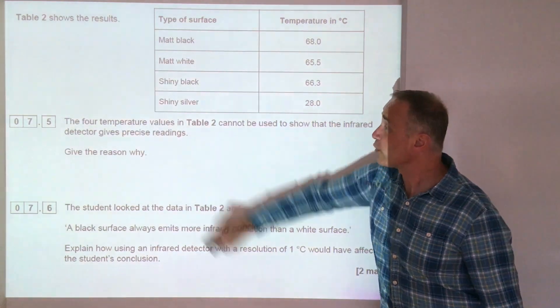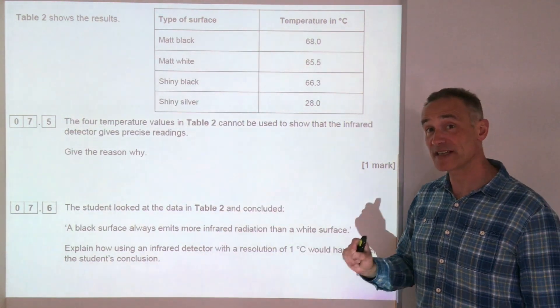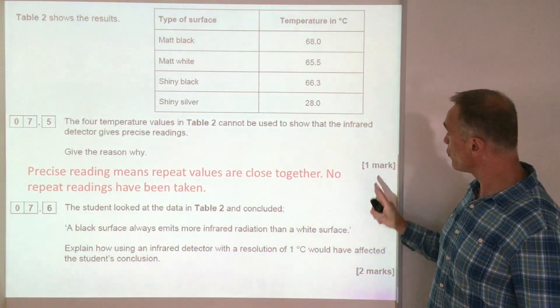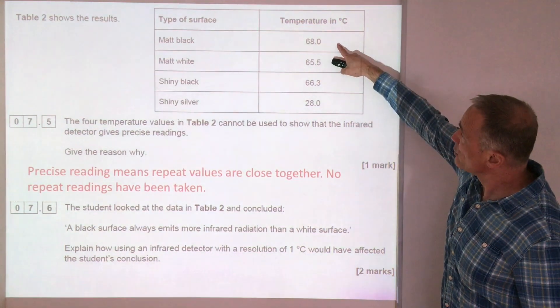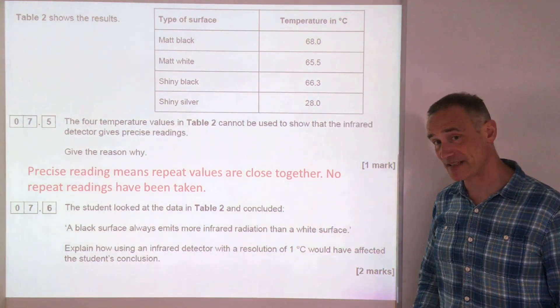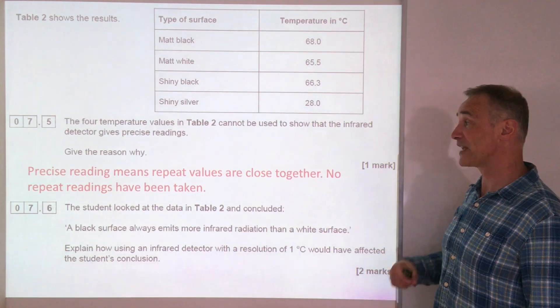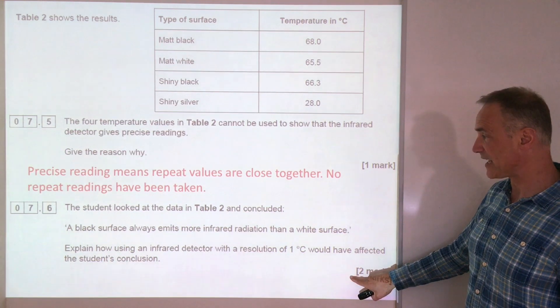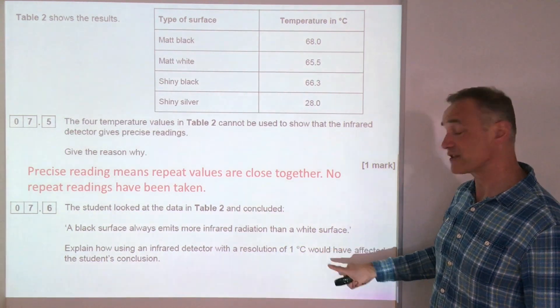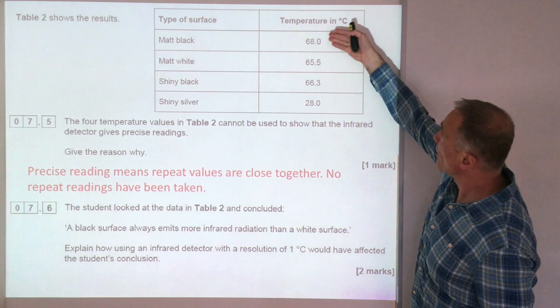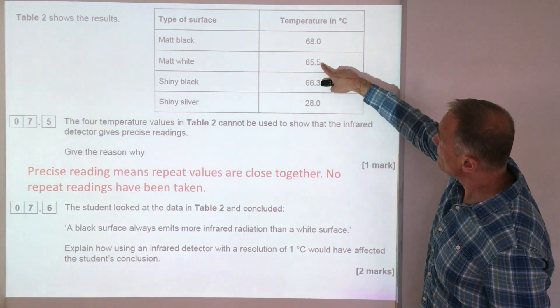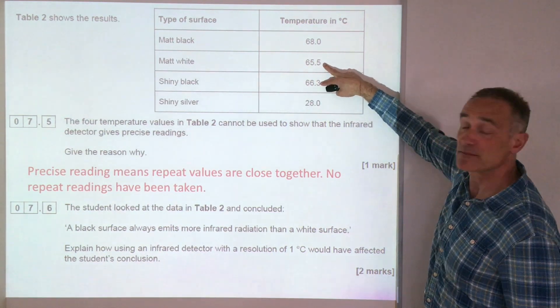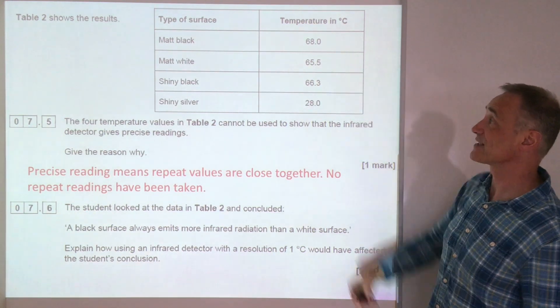Now this question here, what does precise readings mean? Well, precise reading means readings, repeat readings that are close together. So that's one mark, because they're looking to see that you understand that they haven't repeated the readings, so therefore they can't tell whether they're precise. And finally, this part here, explain what would happen if the resolution was one degree. Well have a look. If this was one degree, then that would be 66 and that would be 66. So you wouldn't be able to tell any difference between that and shiny silver.